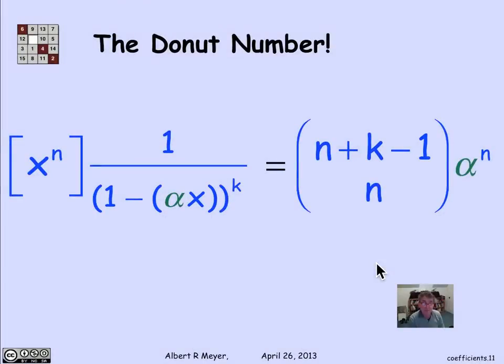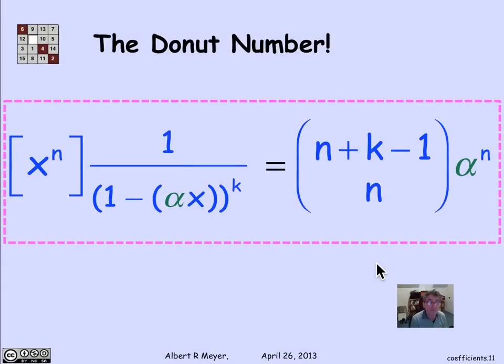And that is going to be a key fact, which is worth remembering, because it will enable us to handle partial fractions and rational function generating functions in generality. So again, reading this, the coefficient of x to the n in 1 over (1 minus alpha x) to the kth power is (n plus k minus 1) choose n times alpha to the n.